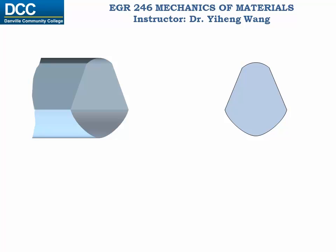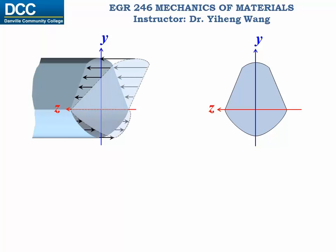Let's look at a cross section of this beam in both 3D and 2D views. This is our y axis, and this is our z axis according to our previous definition. Based on our previous analysis, the normal stress follows a linear distribution on this cross sectional area.